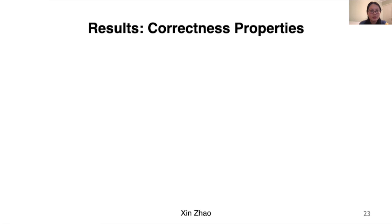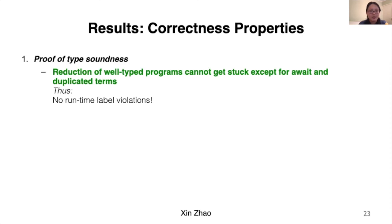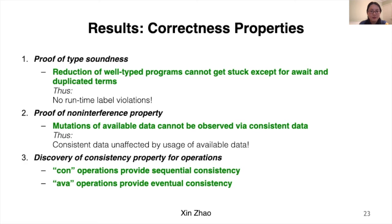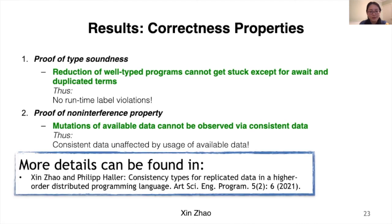Rather than detailing all reduction rules, here are the correctness properties from the formalization. First, the type soundness property indicates that reduction of well-typed programs cannot get stuck except for await and duplicate terms, so there are no runtime label violations. The non-interference property tells us that consistent data cannot be affected by available data. We also use non-interference to discover further consistency properties: consistent operations provide sequential consistency, and available operations provide eventual consistency. More details can be found in the paper.